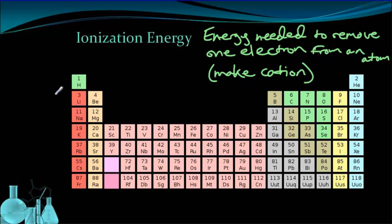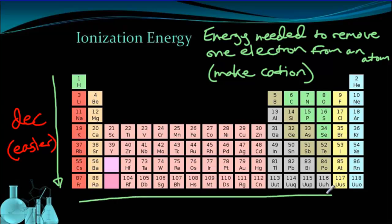So let's look at the trends. As we go down a group, the ionization energy decreases. It becomes easier to make a cation. As we go across a period, left to right, the ionization energy increases. It becomes harder to make a cation. This is the trend for ionization energy.